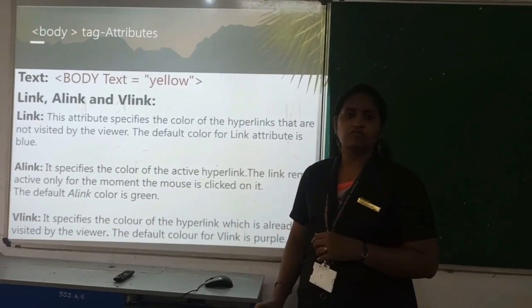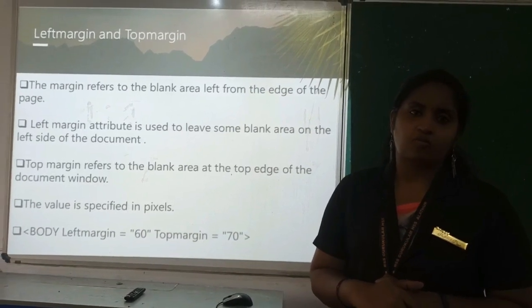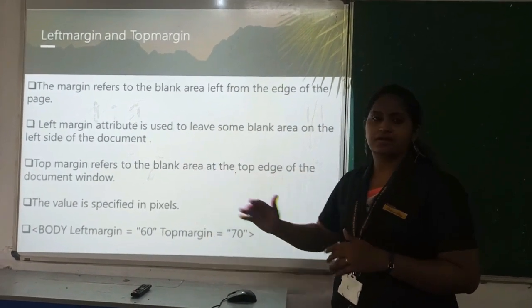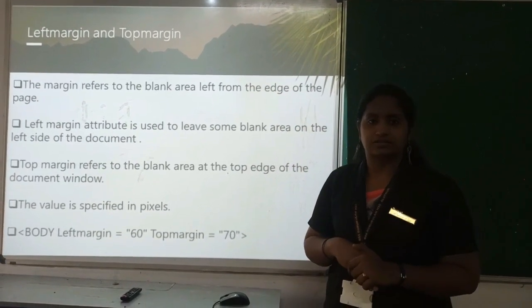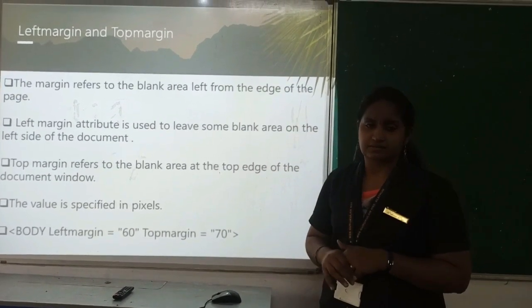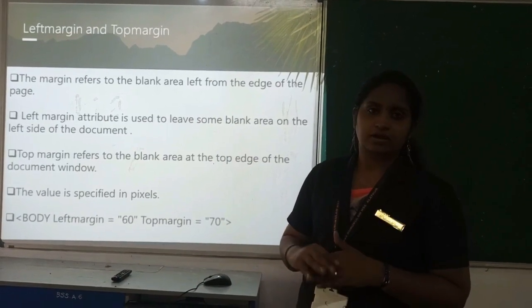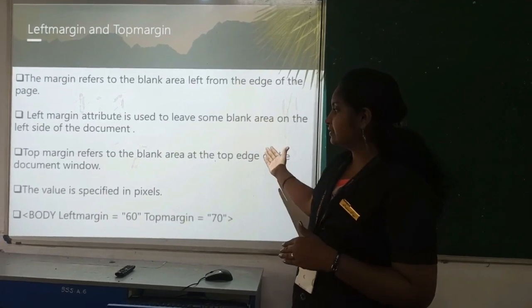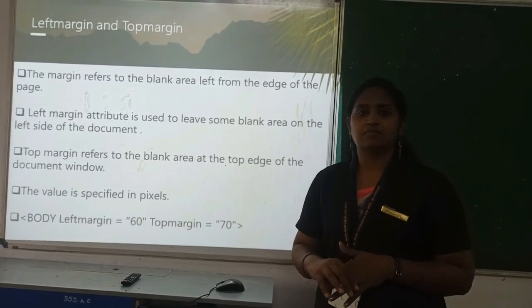Other body tag attributes are left margin and top margin. If you want to give space between the web page content and the edges, you can apply margins. For example, top margin equal to 70 pixels, so content will start from that position. Left margin gives space on the left side of the content.